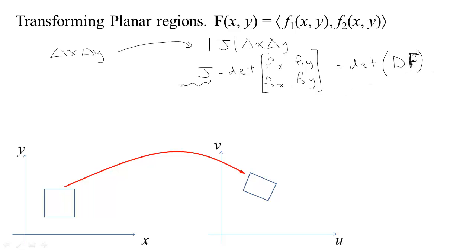We use the J because this is the Jacobian. Some people call the first derivative matrix, the total derivative, the Jacobian. And so to be clear, they call this the Jacobian determinant if that's the case. So watch out for Jacobian or Jacobian determinant — just see which one is being used in context before you jump to any conclusions.